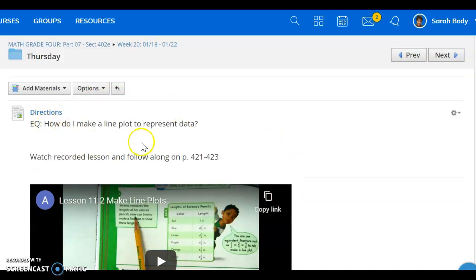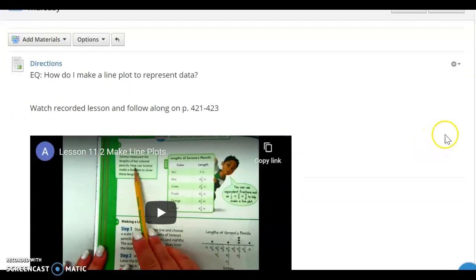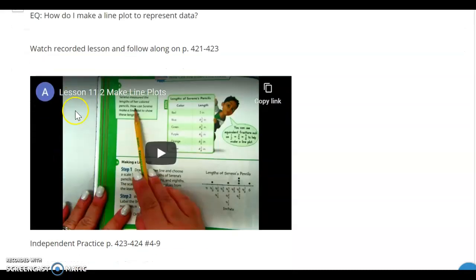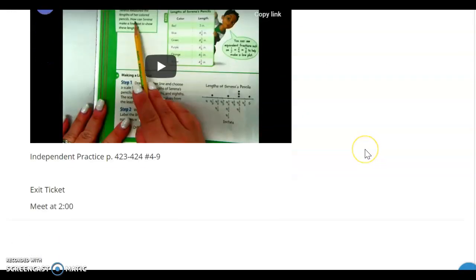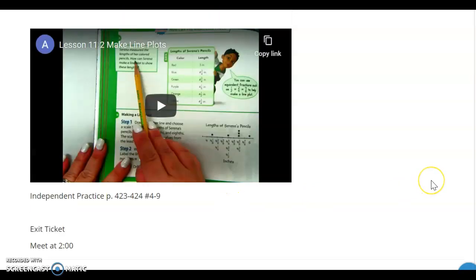On Thursday, we are going to continue with our work on line plots, except this time you are learning how to make a line plot to show that set of data. The recorded lesson is going to go through some of those problems on pages 421 to 423. Please make sure that you have volume 2 open to those pages so that you can follow along. On your own, you are going to complete pages 423 to 424, problems 4 through 9.